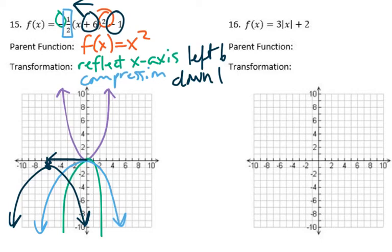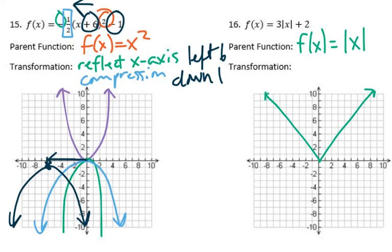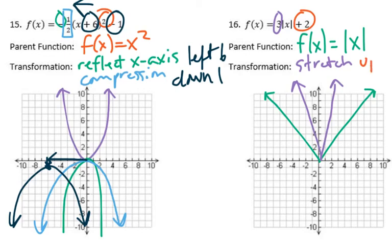Now let's look at number sixteen. We've got the absolute value here, so there's our parent function — absolute value basically looks like a V. It's got the three there, we call that a stretch by three, so it's making it skinnier. Then we're going to add two, so that's up two. We take that vertex, move it up two, and it should look something like that.